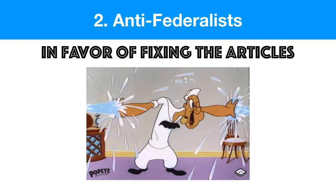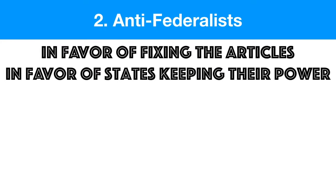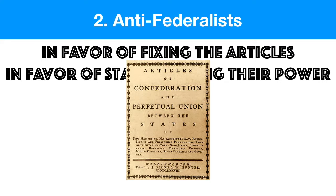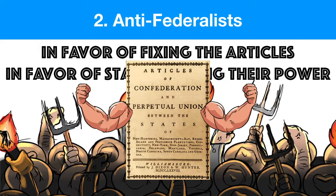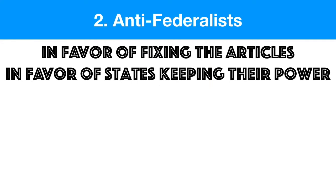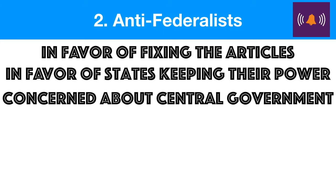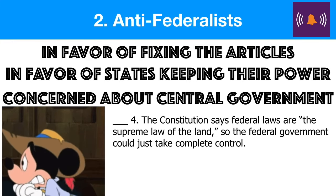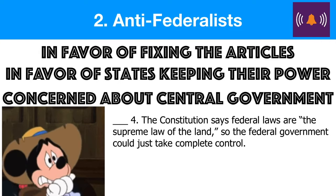The Anti-Federalists wanted the states to keep all their powers. They understood some changes to the Articles were needed after Shays' Rebellion, but felt they could give it enough power to deal with those problems while still letting the states be in charge. Another defining feature of the Anti-Federalists was their concern about the central government. This is important for your EOC — if a question asks 'who might have said this,' look for language showing concern about the government's power. For example, a statement like 'the federal government could just take complete control' reflects Anti-Federalist fear of government overreach.